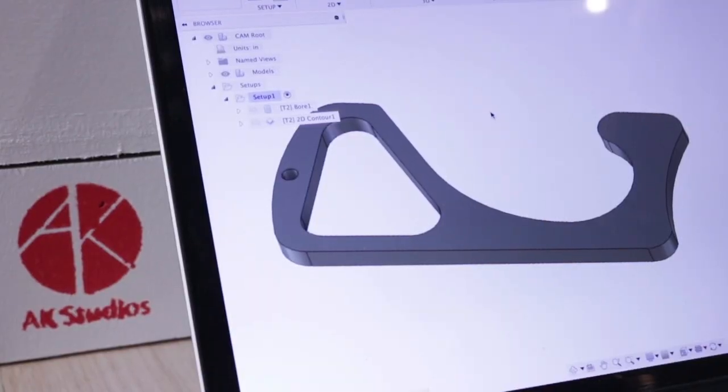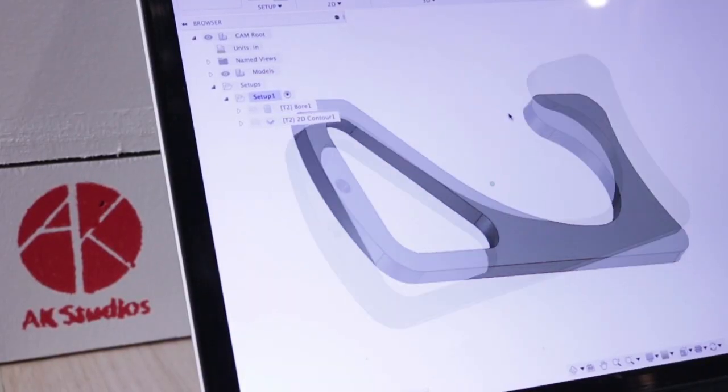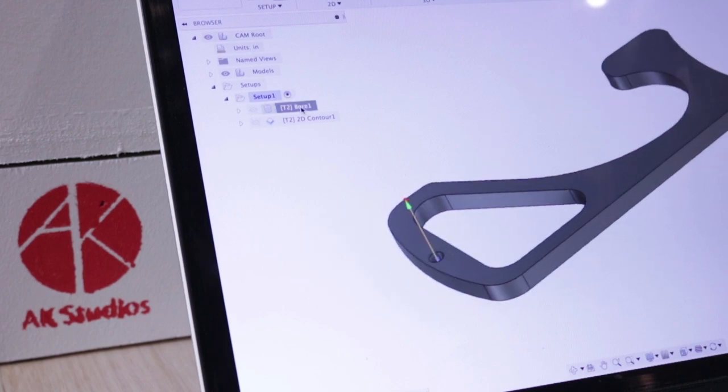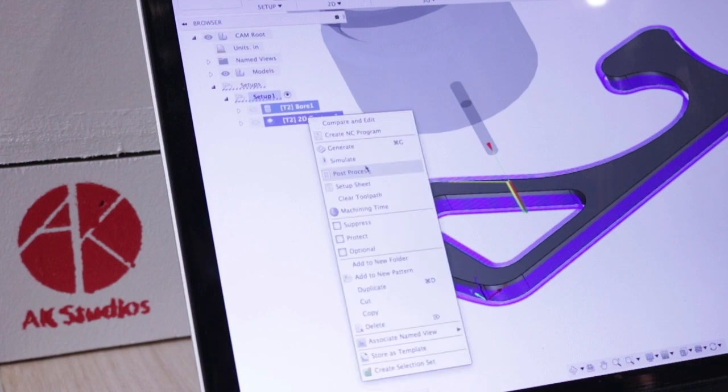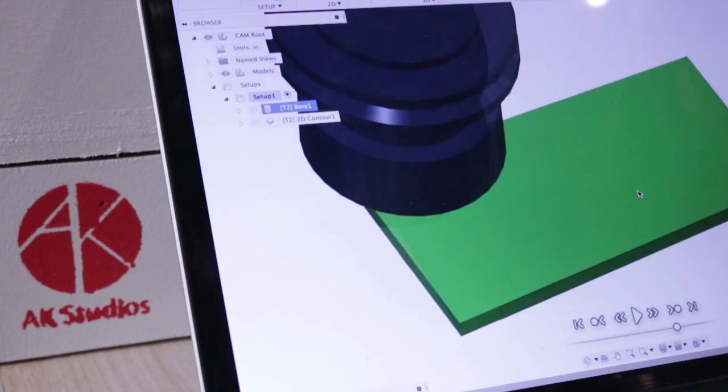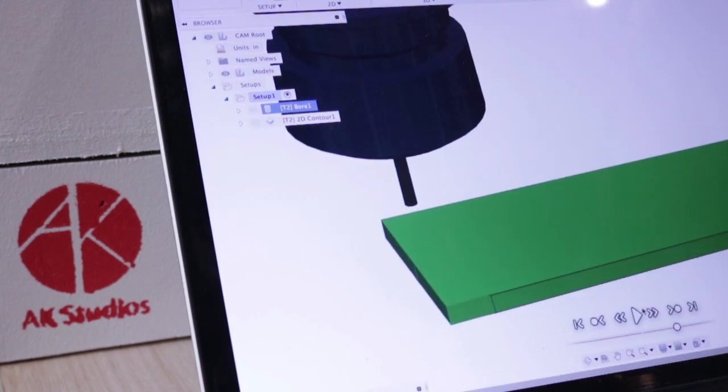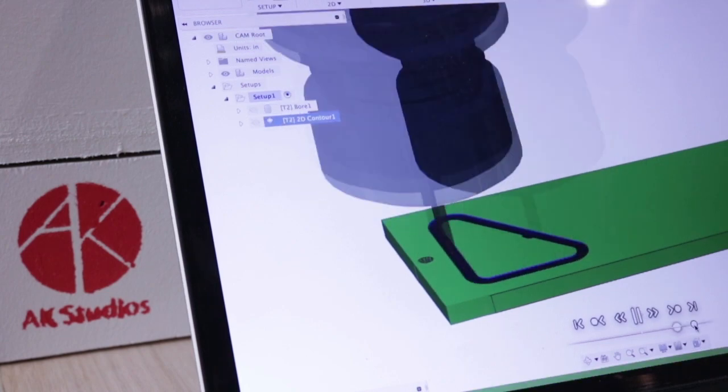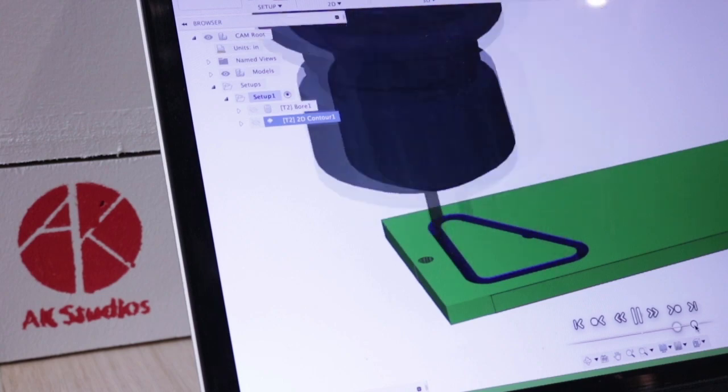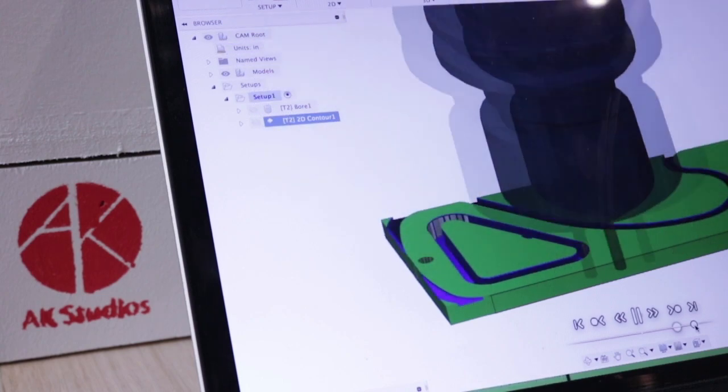So the CAM files are really easy for this part. You just have one boring operation and a 2D contour. Depending on what machine you're using to run and cut this part, you're gonna have different feeds and speeds, but take note that when you start cutting your copper part, you're gonna have some difficulty with chip evacuation and you want to be careful and make sure that your tool is not heating up.